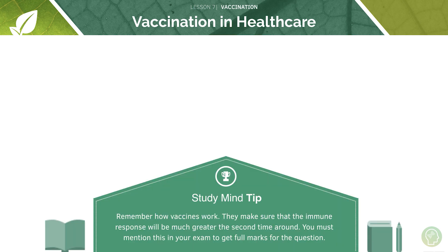Key tip: remember how vaccines work — go back to the diagram where vaccination is the first exposure to the pathogen and work through it again, drawing and annotating it in your own terms. Remember that vaccines overall ensure the immune response will be much greater the second time round — it is much more rapid and much bigger. These are the really key concepts to take from this tutorial.